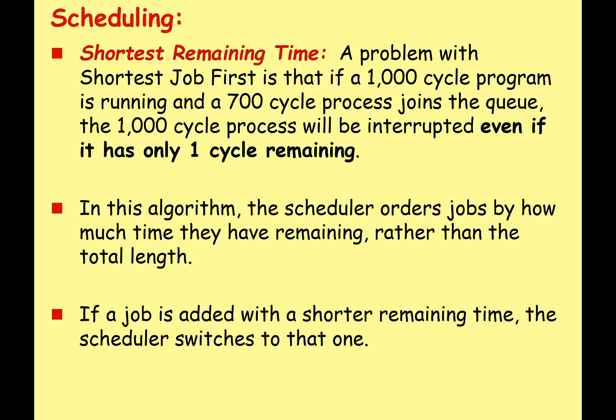Moving on to shortest remaining time — don't mix that up with shortest job first. A problem with shortest job first is that if a 1000-cycle program is running and a 700-cycle process joins the queue, the 1000-cycle process will be interrupted even if it has only one cycle remaining. In shortest remaining time, the scheduler orders jobs by how much time they have remaining rather than the total length, making it a little more efficient.